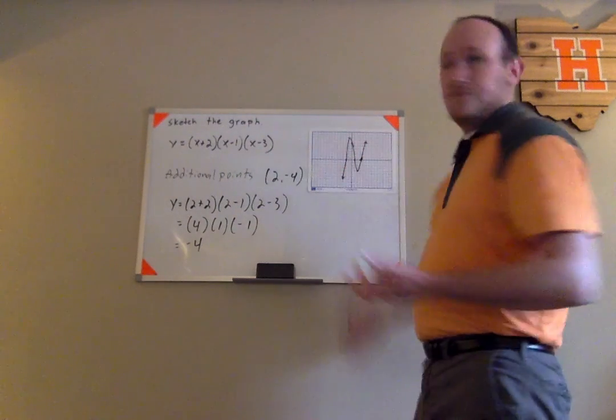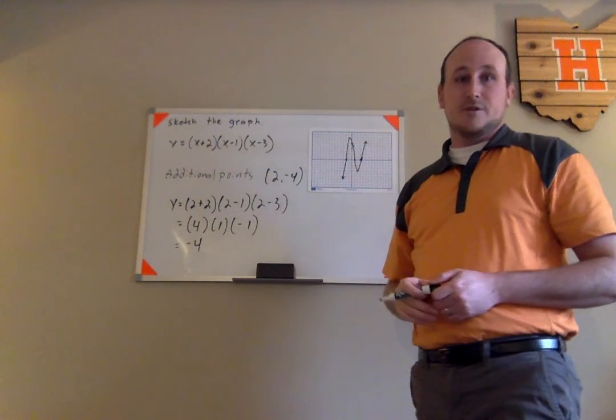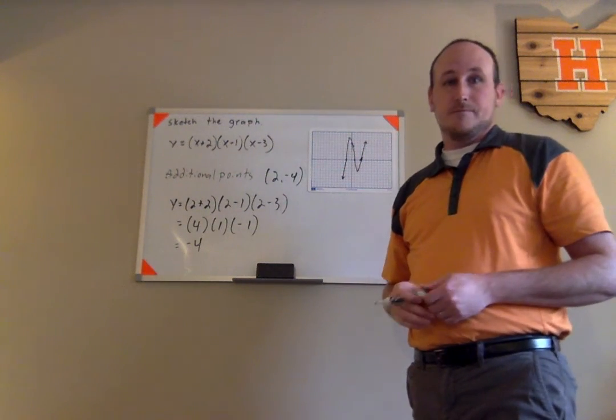And now I have a rough sketch of what this polynomial function's graph should look like.